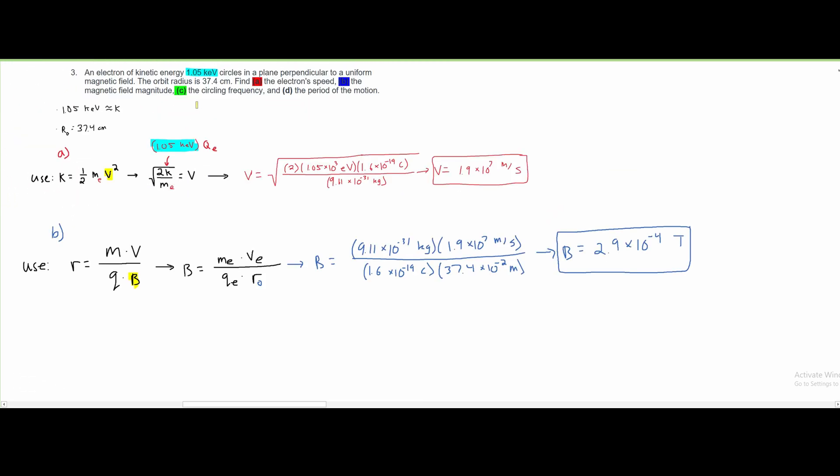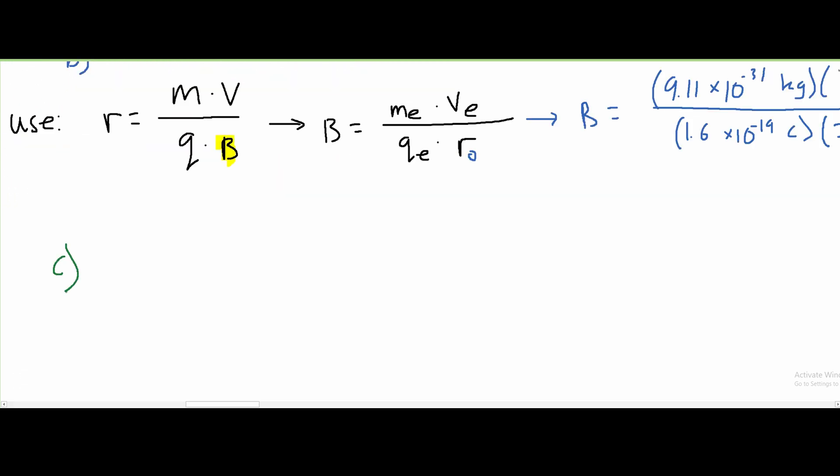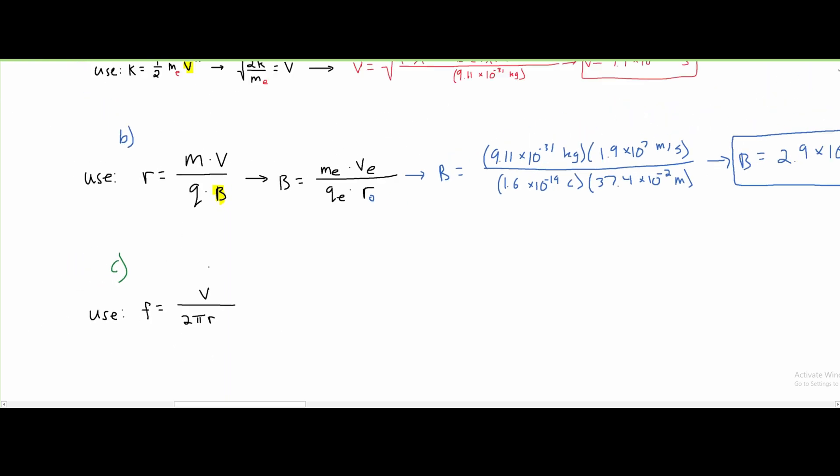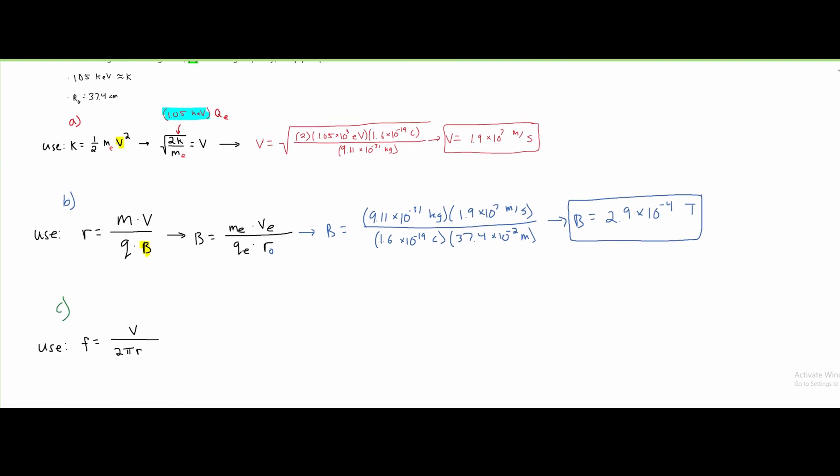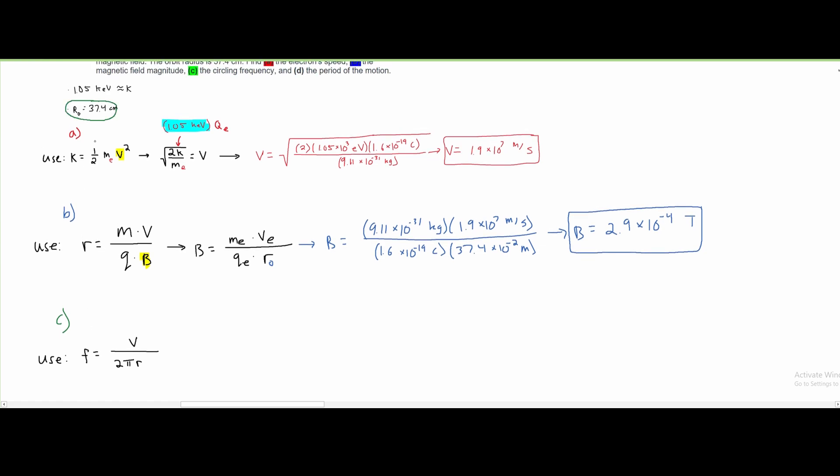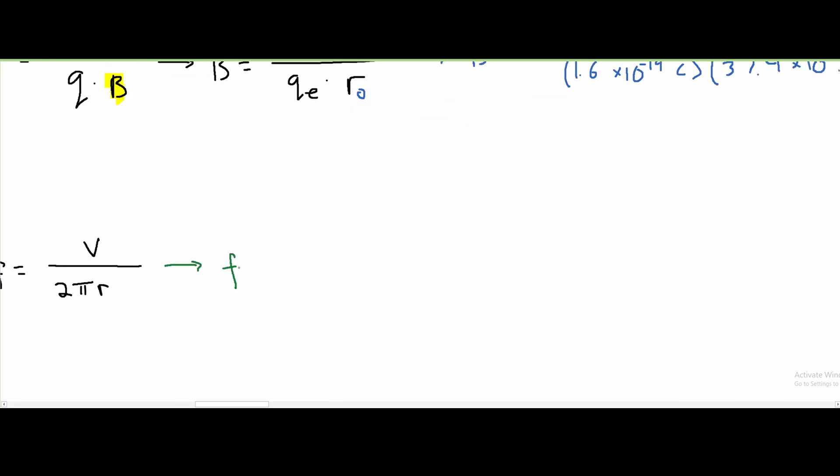Part C is asking us for the circling frequency. And for frequency, we are going to use this formula. We're going to use that the frequency equals the speed divided by 2π radius, 2πr. We have all these values. We have our v from part A. We know 2π and we have our radius right here.